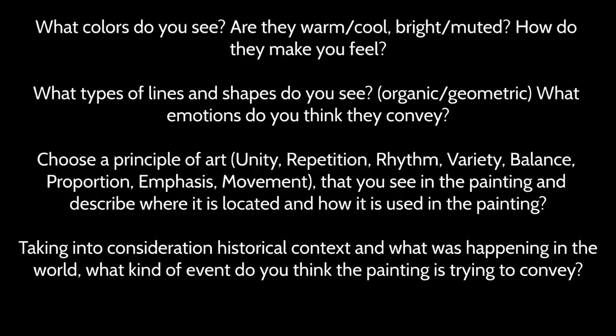What colors do you see? Are they warm, cold, bright, muted? How do they make you feel? What types of lines and shapes do you see — organic, geometric? What emotions do you think they convey? Choose a principle of art — unity, repetition, rhythm, variety, balance, proportion, emphasis, movement — that you see in the painting and describe where it is located and how it is used in the painting. Taking into consideration historical content and what was happening in the world, what kind of event do you think this painting is trying to convey?